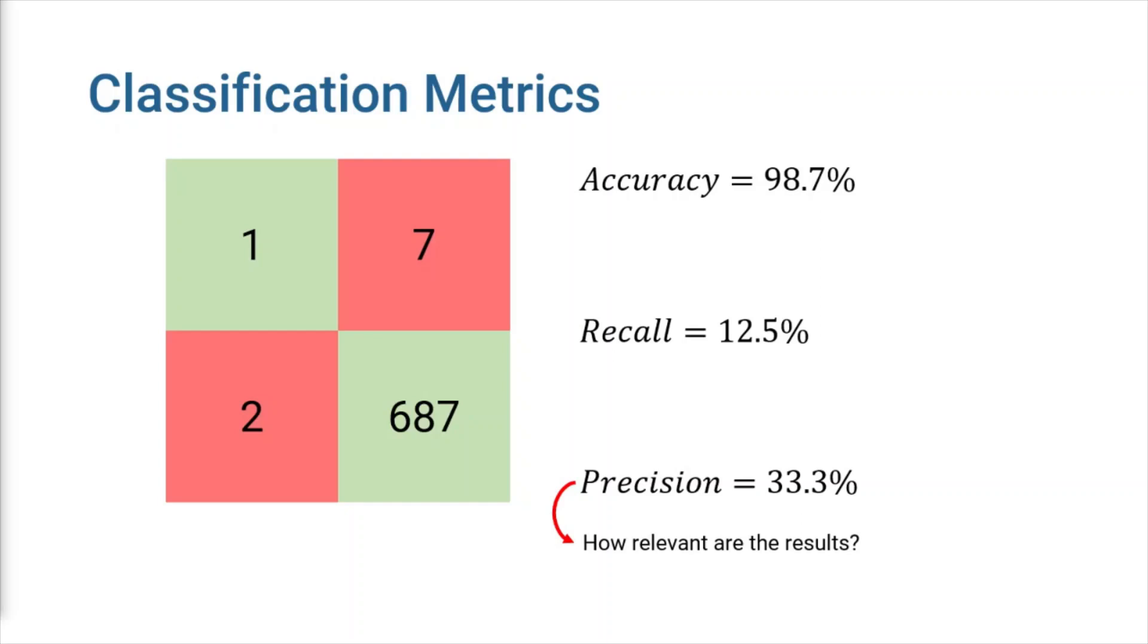But as you can see, precision of our model is only 33%, which means two times out of three, it falsely accuses a person of being an unlawful superhero. If we want to avoid causing troubles for ordinary people and catch superheroes with higher confidence, we should consider better models with higher precision.